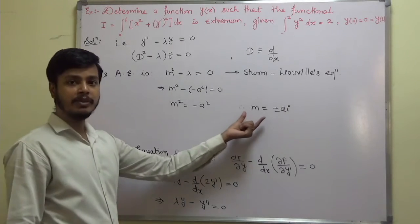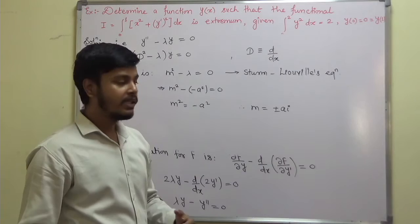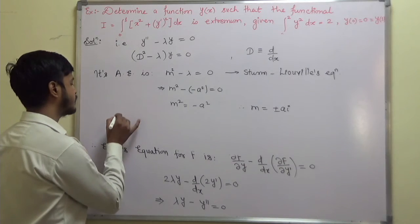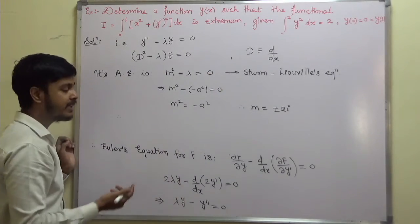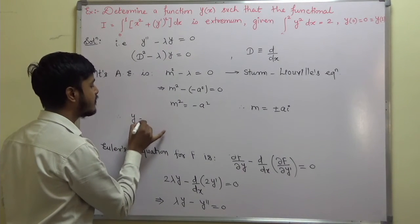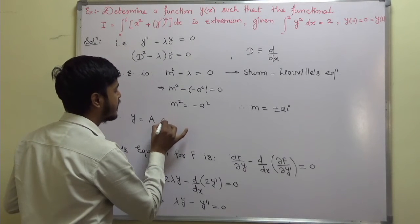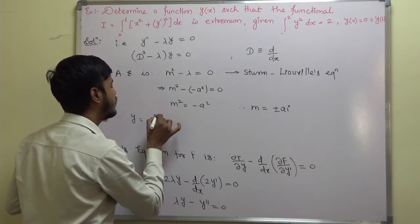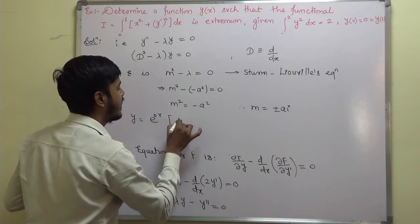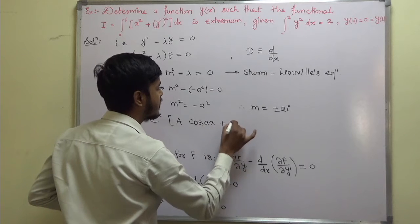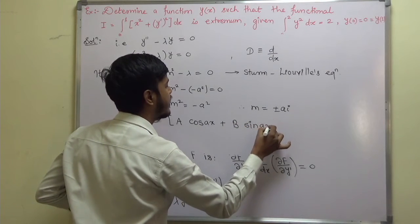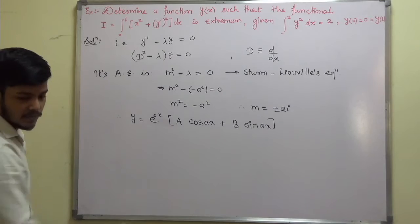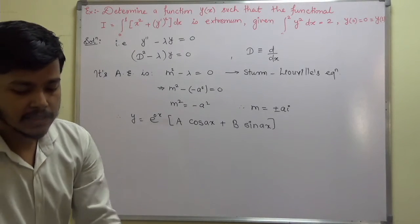Therefore m equals plus or minus ai. Since the roots are complex, the complementary function is y equals e to the power 0x times (A cos(ax) plus B sin(ax)). Since e to the power 0 is 1, we write y equals A cos(ax) plus B sin(ax). Call this equation 1.